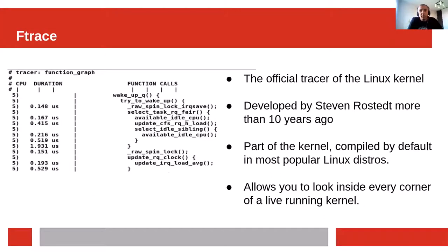This talk is about host and guest tracing using Ftrace. Ftrace is the official tracer of the Linux kernel. It has been part of the kernel since 2008, started by Steven Rosdet as part of the kernel's real-time patch. Ftrace is enabled by default in the kernels of most Linux distributions. It's very popular and widely used by kernel developers. It allows you to look inside every corner of a live running kernel — almost any function can be traced, along with a few thousand predefined events in the kernel.